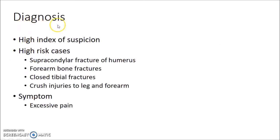Now let us see about the diagnosis of Compartment Syndrome. A high index of suspicion is required to diagnose it early. Some cases are more prone to develop Compartment Syndrome — these are known as high risk cases. These include supracondylar fracture of humerus, forearm bone fractures, closed tibial fractures, and crush injuries to the leg and forearm.